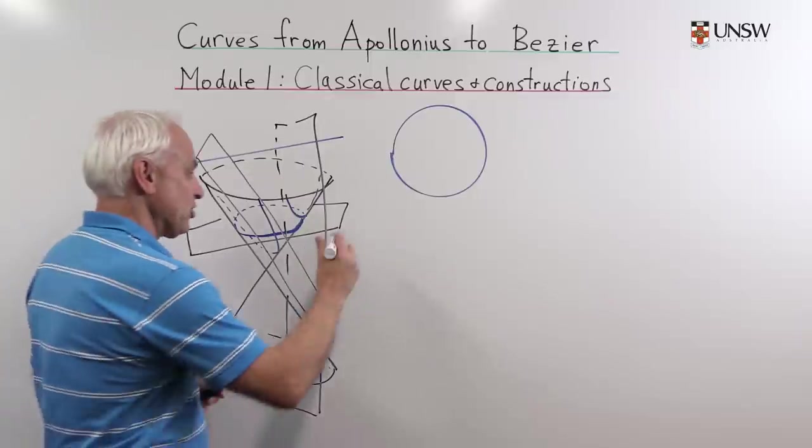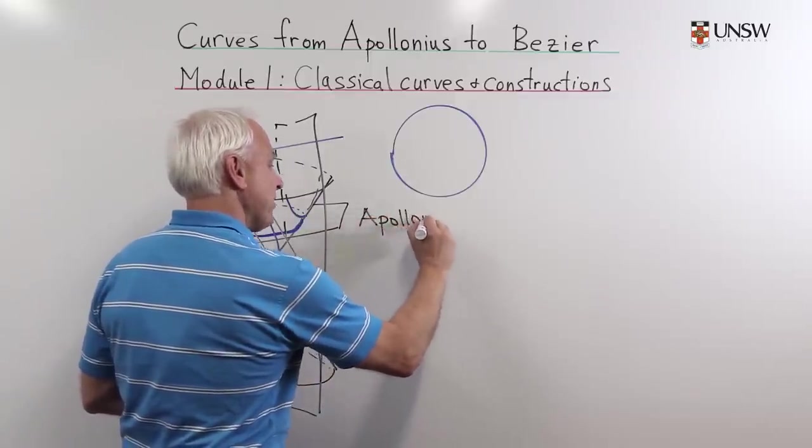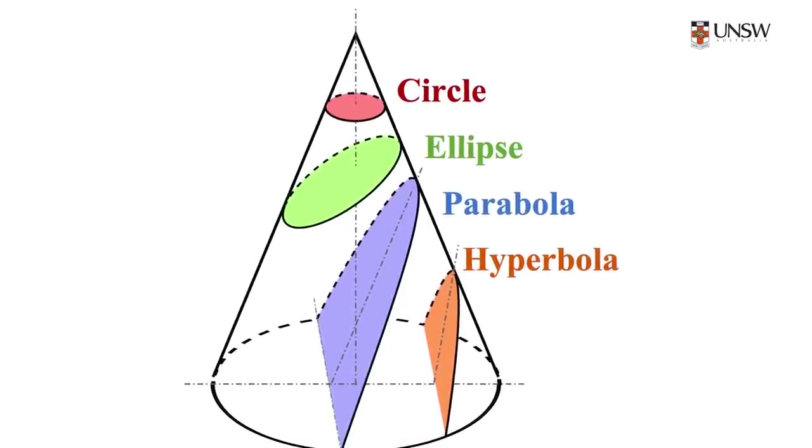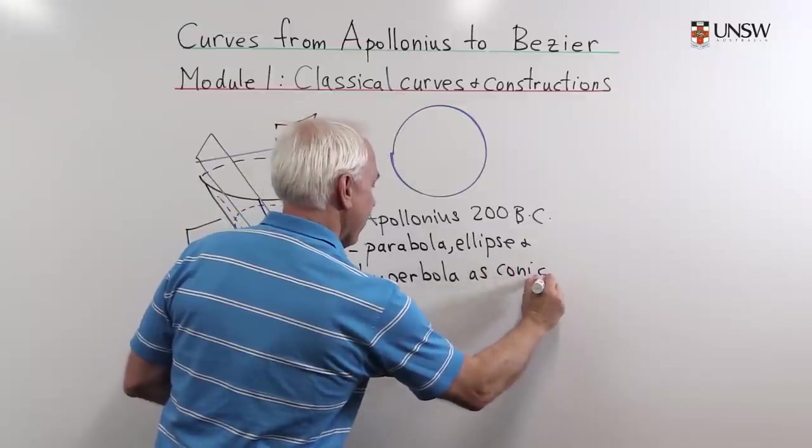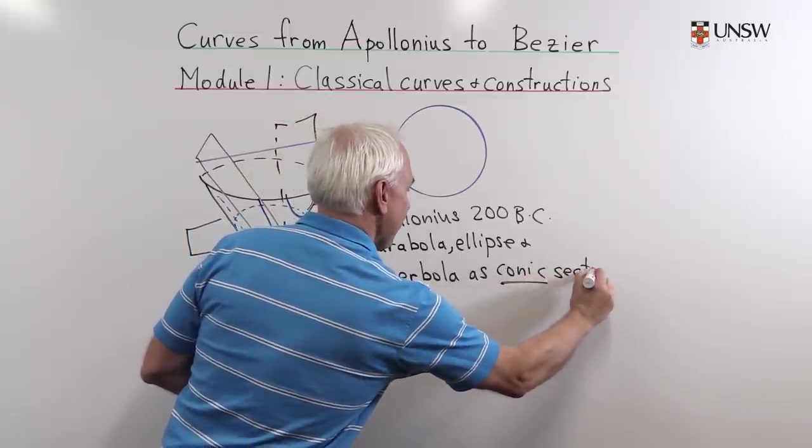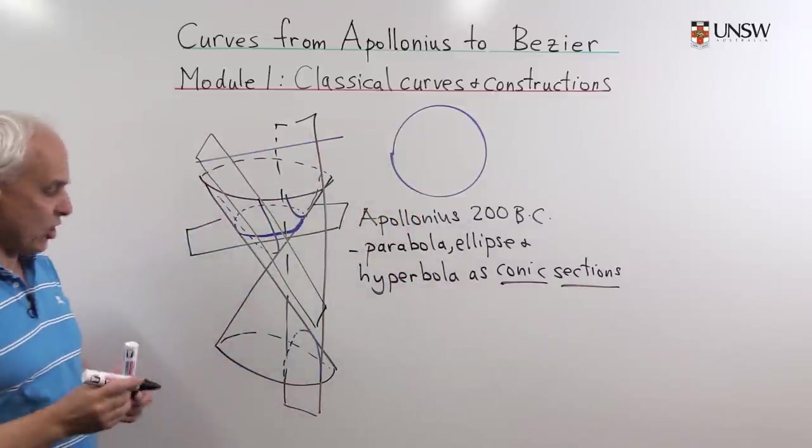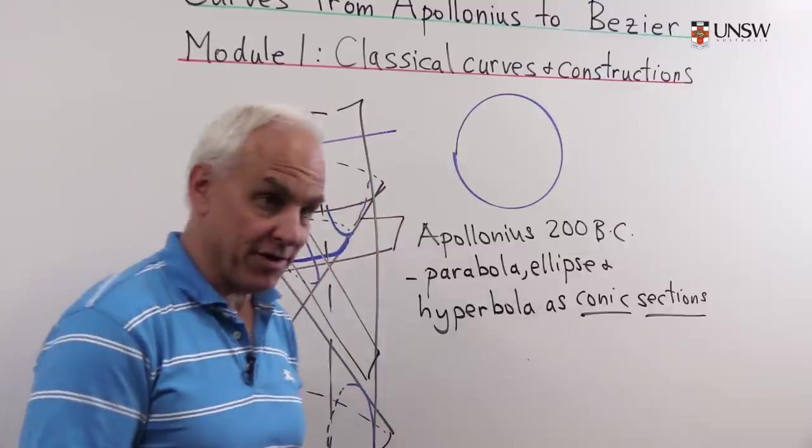The ancient Greeks, in particular Apollonius of Perga 200 BC, introduced the parabola, ellipse, and the hyperbola as conic sections, in other words as slices of a cone. But Apollonius also had other ways of thinking about the conic sections.